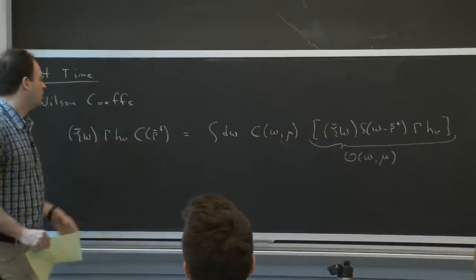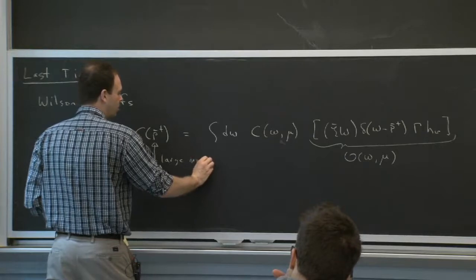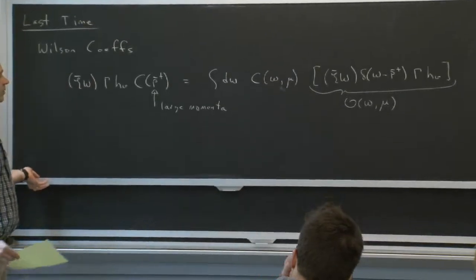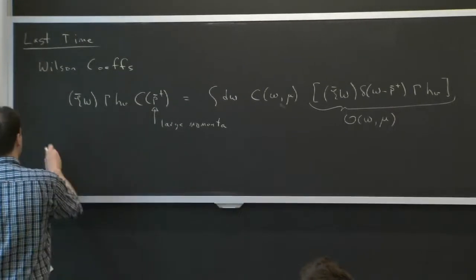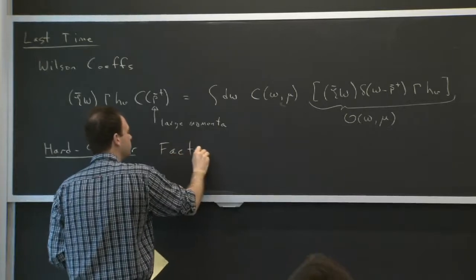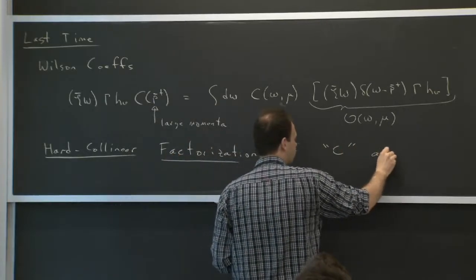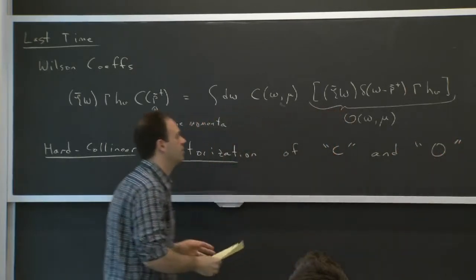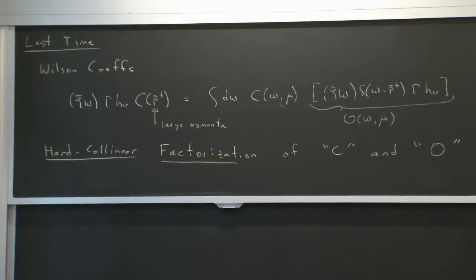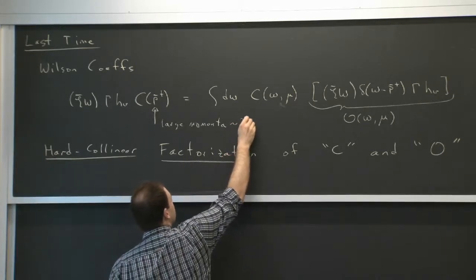We decided we wanted to think about that as having convolutions between variables that appear in the Wilson coefficients and variables that appear in the operator. The most general thing we can write for the Wilson coefficients is that it can depend on large momenta. Large momenta always show up in Wilson coefficients, including the order lambda-zero component of collinear fields. This is hard-collinear factorization.